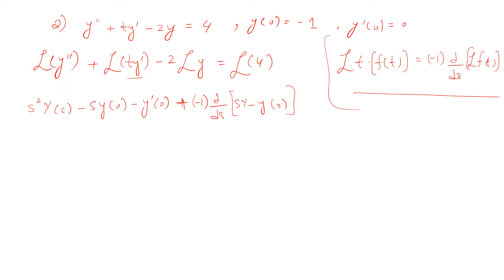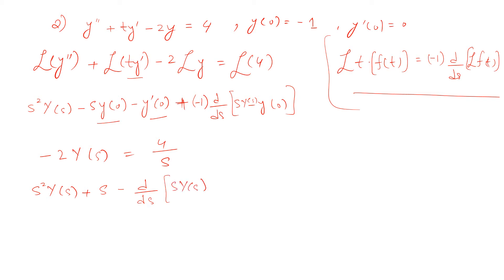The Laplace of y gives −2Y(s), and L{4} = 4/s. Substituting the initial conditions — y(0) = −1 and y'(0) = 0 — the equation becomes: s²Y(s) + s − (d/ds)[s·Y(s) + 1] − 2Y(s) = 4/s.